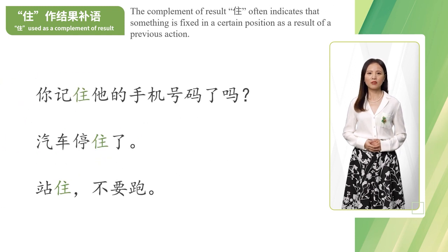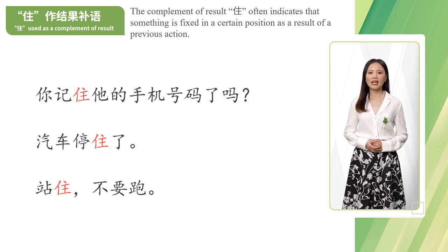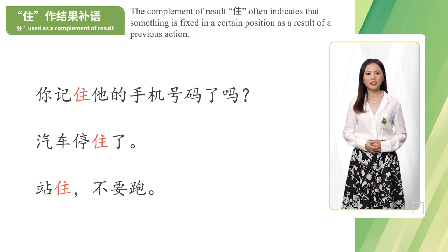The complement of result 住 often indicates that something is fixed in a certain position as a result of a previous action.